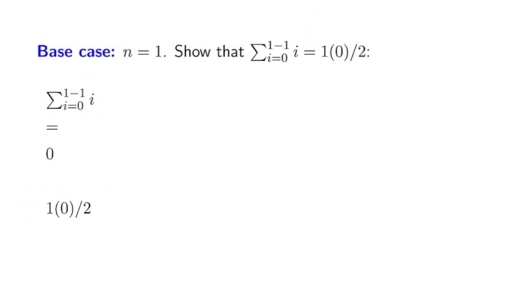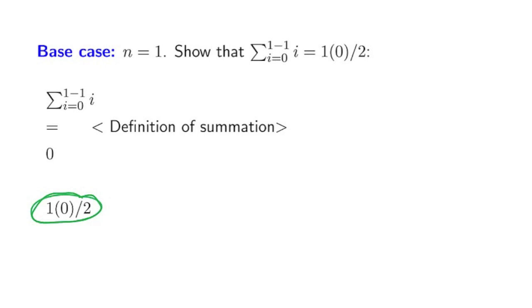The first step is to say that the definition of the sum from i equals 0 to 1 minus 1 of i is just the sum from i equals 0 to 0, which means I'm adding 0 to absolutely nothing else. So we get 0. I give a justification for that — it simply comes from the definition of summation. Now, this is where we want to be. By basic arithmetic, if multiplication has 0 in it, it evaluates to 0, and therefore the result is true. So now we know that the base case is true.